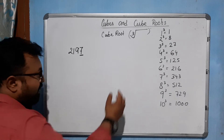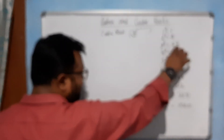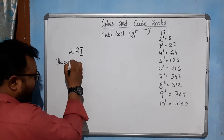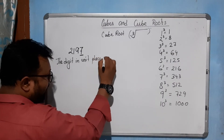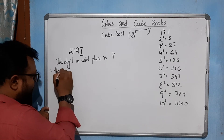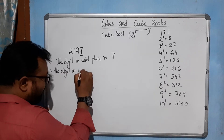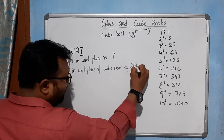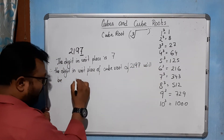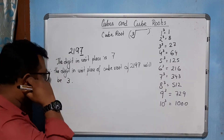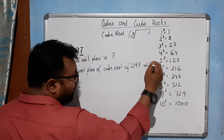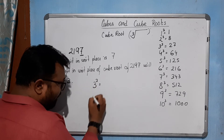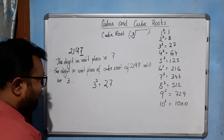The cube of 3 ends with 7 in the unit place. The unit digit is 7, therefore the digit in the unit place of the cube root of 2197 will be 3, because if we multiply 3 three times we get 27, which has 7 as the unit digit. Here also 7 is in the unit place, and 3³ = 27.